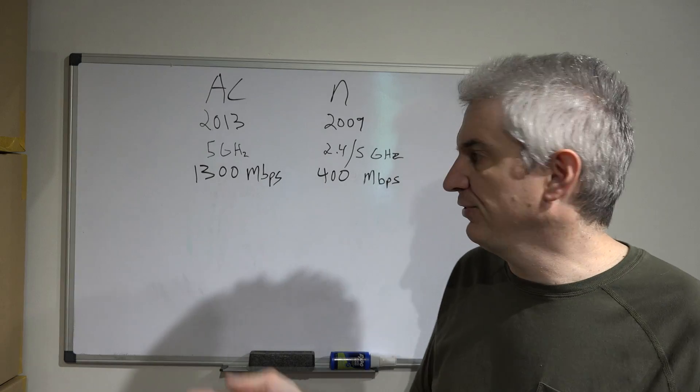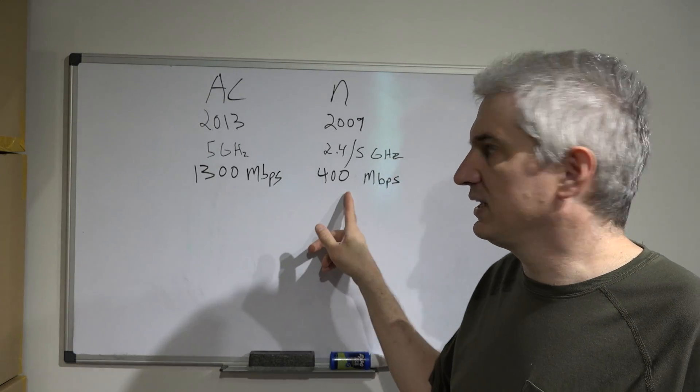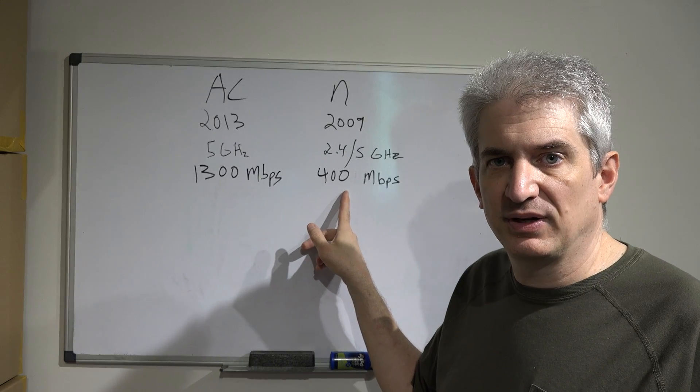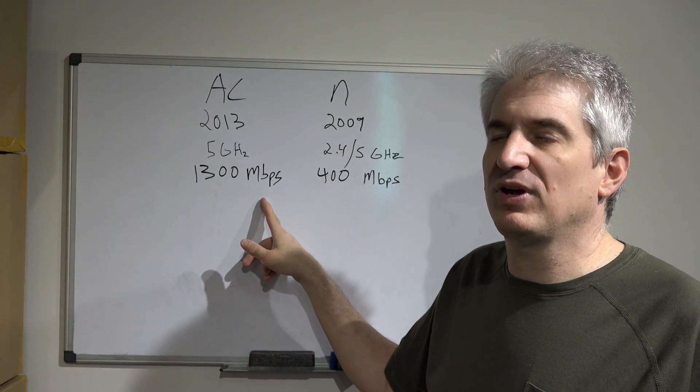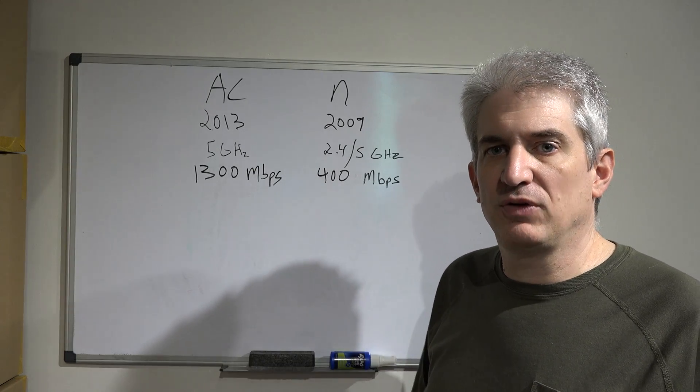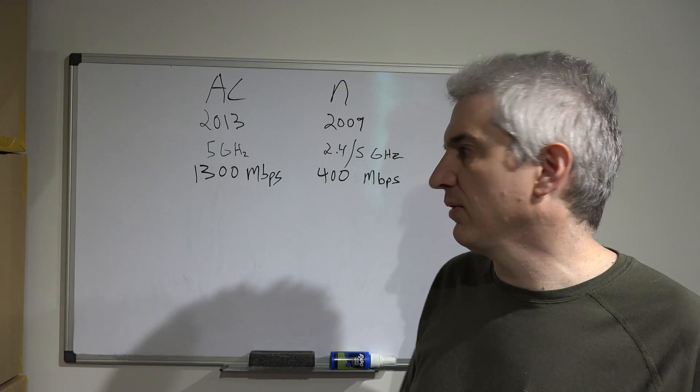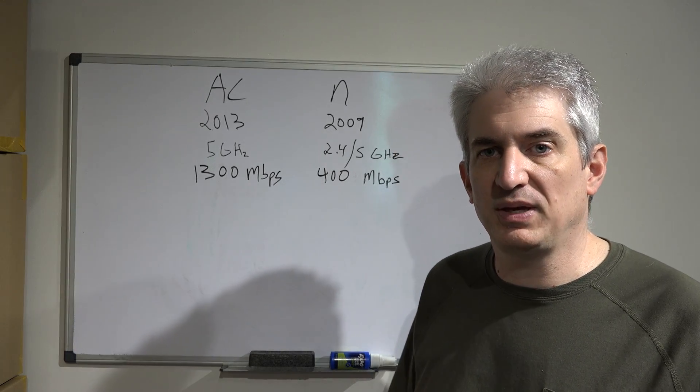Now, for practical purposes, even if you're close to the router, you really need to just cut these numbers in half. This is theoretical in the most ideal possible conditions. So if you're reasonably close to the router, cut these in half, and that's probably a more realistic speed for you.